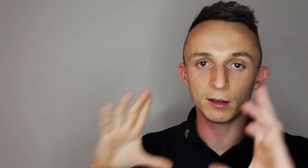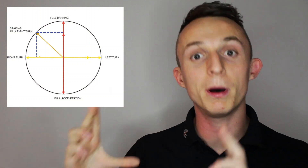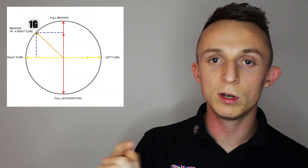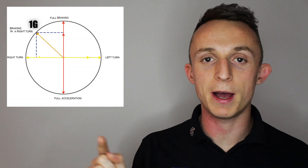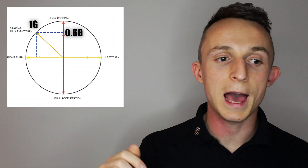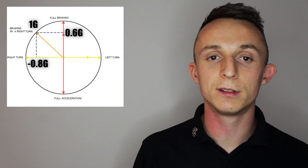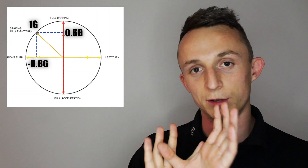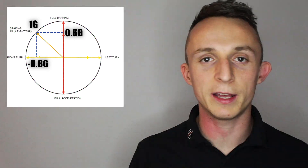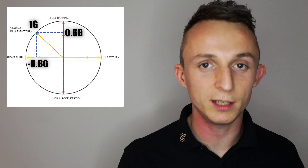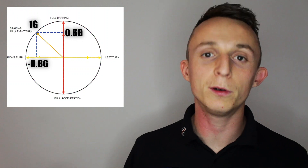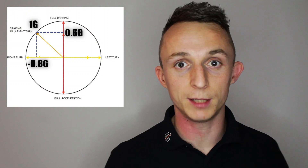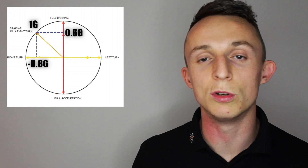A worked example of this trade-off between longitudinal and lateral acceleration can be seen here. With a maximum combined value of one on the outside of the circle, we can combine 0.6 of positive longitudinal acceleration and 0.8 negative of lateral acceleration — so we're braking and turning left — and that puts us on the maximum value of one on the outside of the graph. This highlights that if we're turning at negative 0.8G, we can't use the full one G for turning because some of that tyre's grip is being used to slow the car down as well.